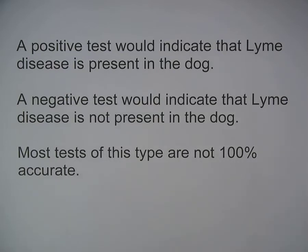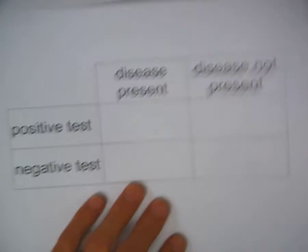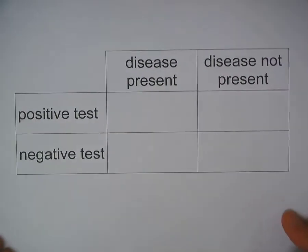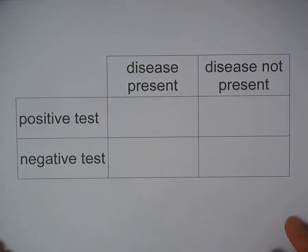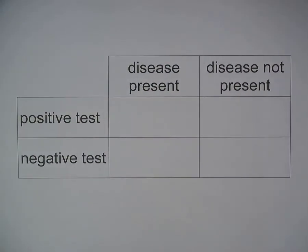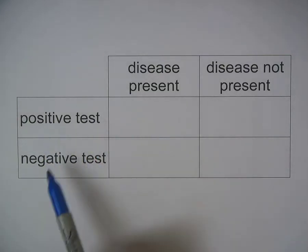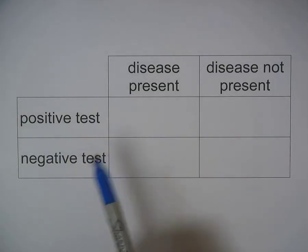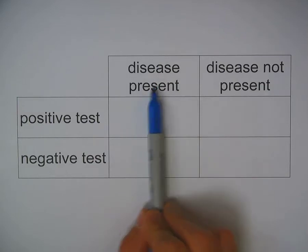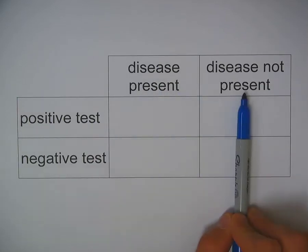Most tests of this type are not a hundred percent accurate, so sometimes you will get incorrect or false tests. Let's take a look at the four different outcomes that can happen with the dog and the test. I have it broken down into two categories: either a positive test or negative test, and then whether the disease was present or not present in the dog.